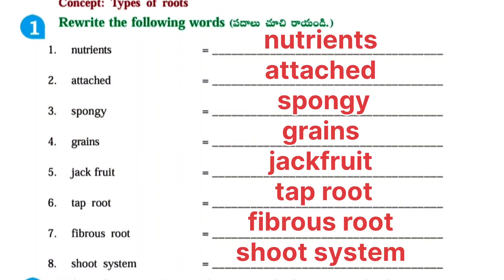You have to identify those words. Next, Worksheet number two. Concept: Types of roots. Read the following words: Nutrients, attached, spongy, grains, jackfruit, tap root, fibrous root, shoot system.